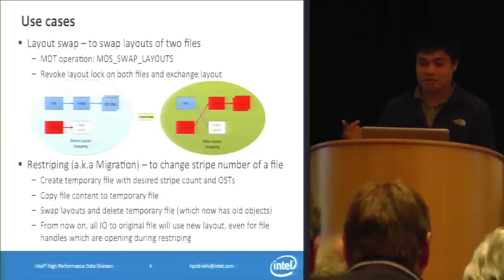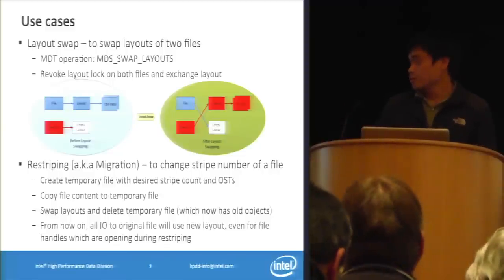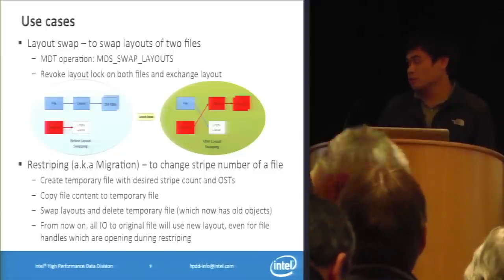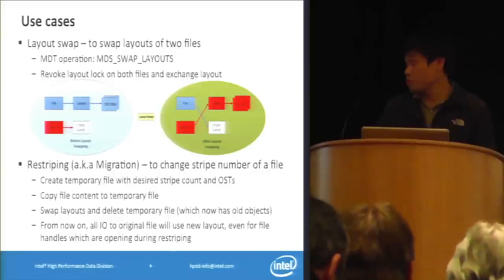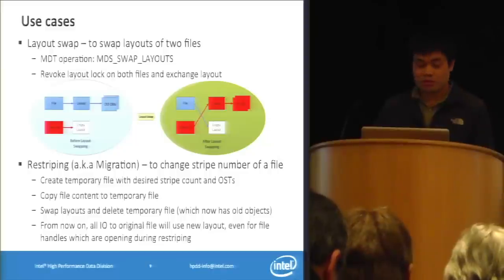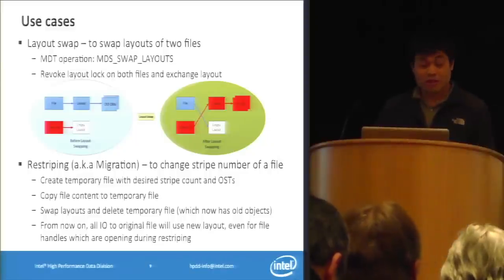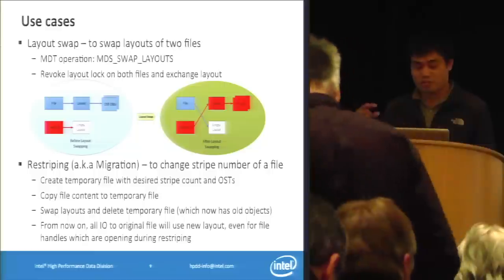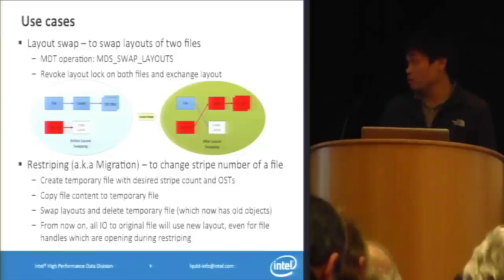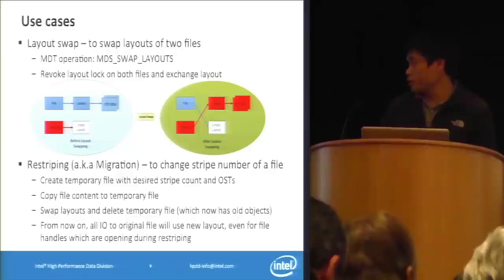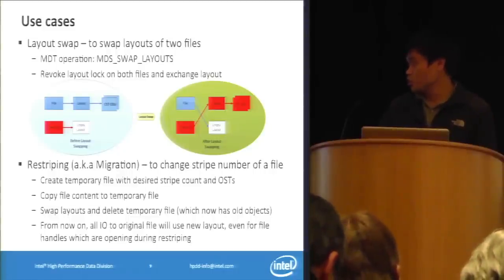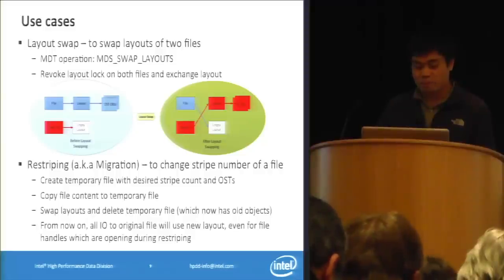You have two files — the file with blue blocks is the actual file which contains your real data, and the file with red blocks is the temporary file. This temporary file is created with the desired layout so that you can change the layout of your original file. The picture on the right shows the file state after layout change — the blue file has an empty layout.